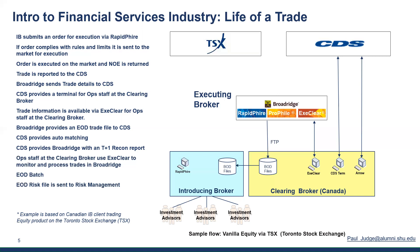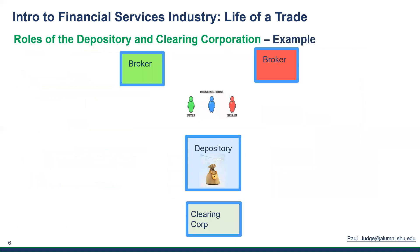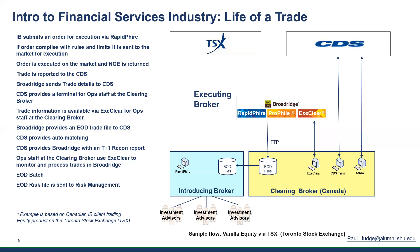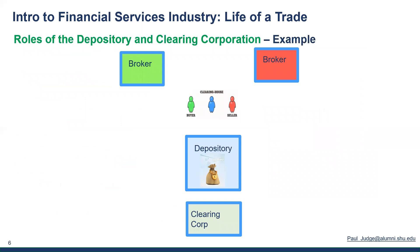You also have to do risk management — you have to notify your risk team so they understand where you are in your process. Now, let's talk about the depository and the clearing corp. Instead of a Canadian example, let's talk about two brokers: broker green and broker red. Let's assume they're both executing and clearing brokers — they're not only the executing broker, they're also the clearing broker.